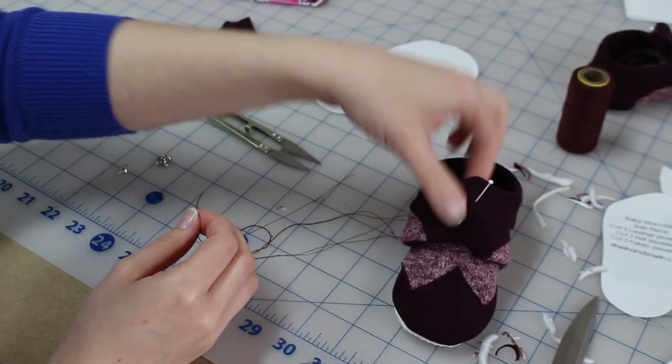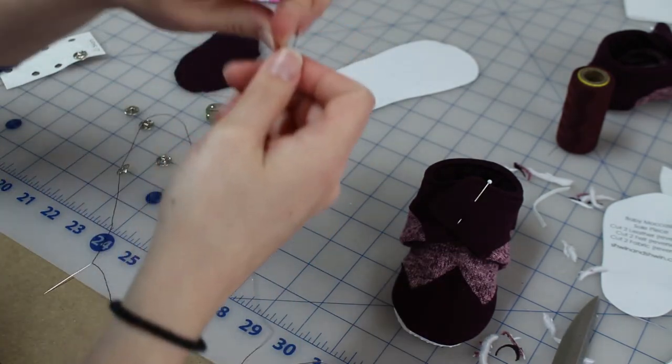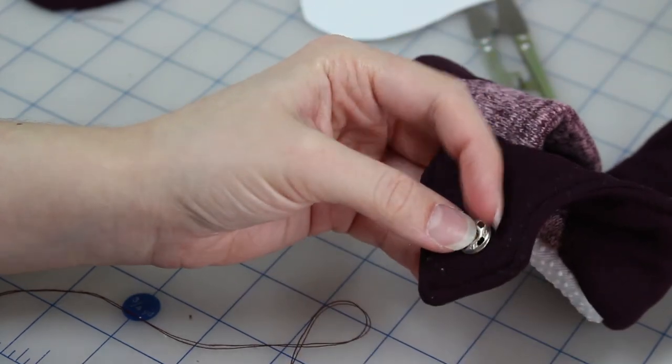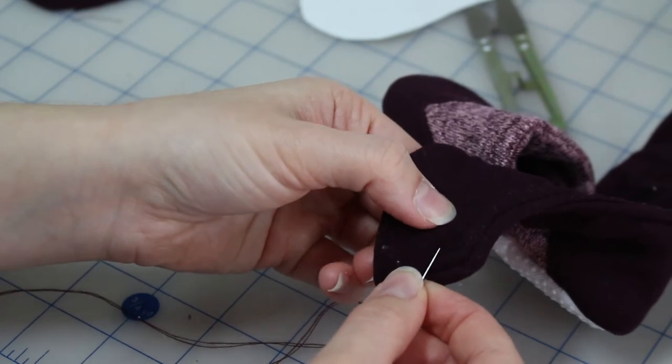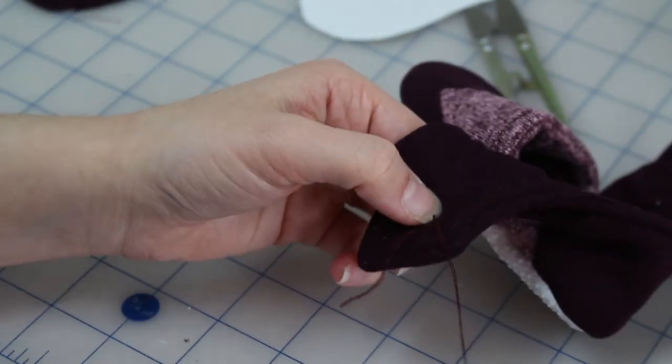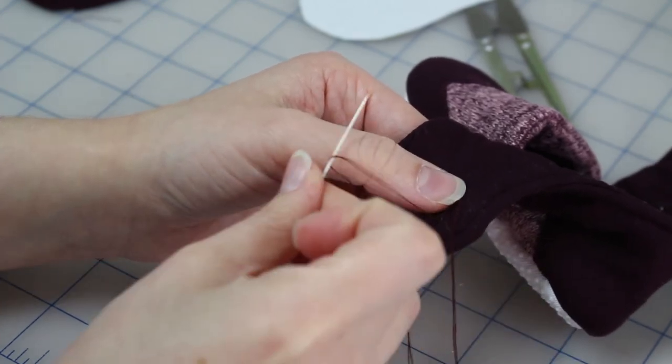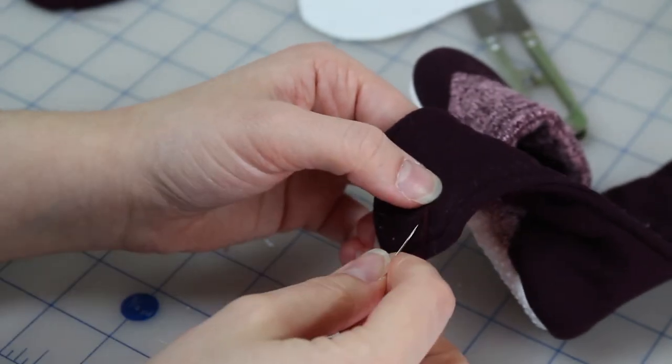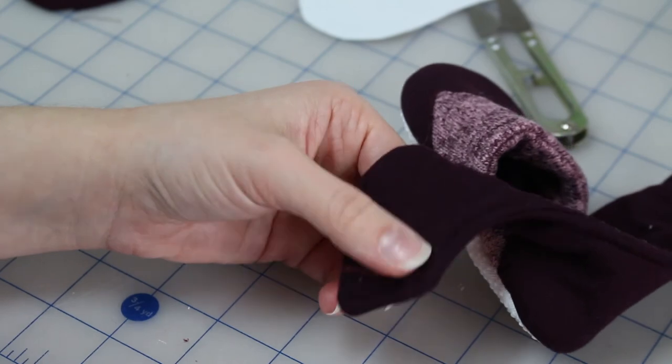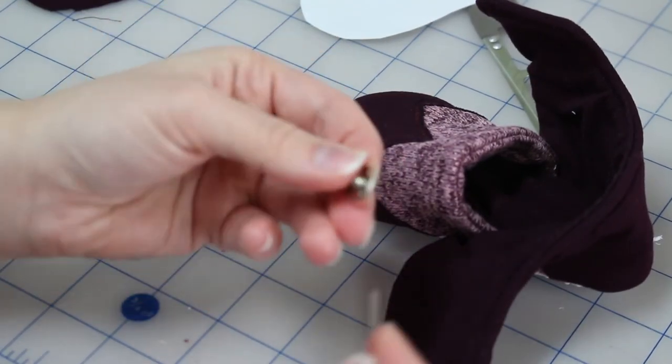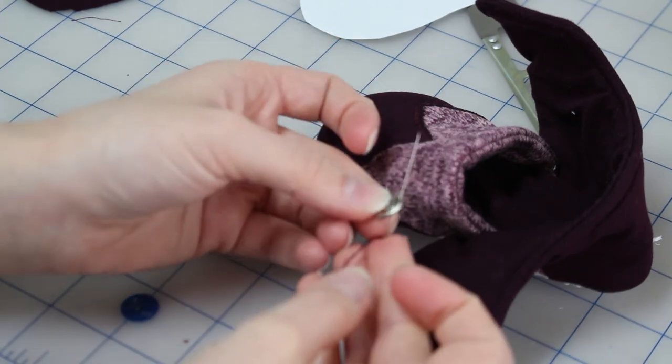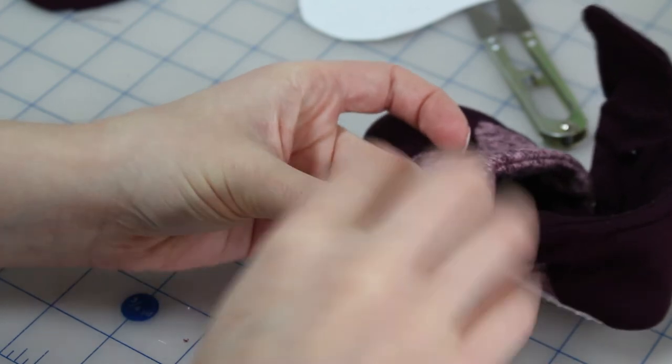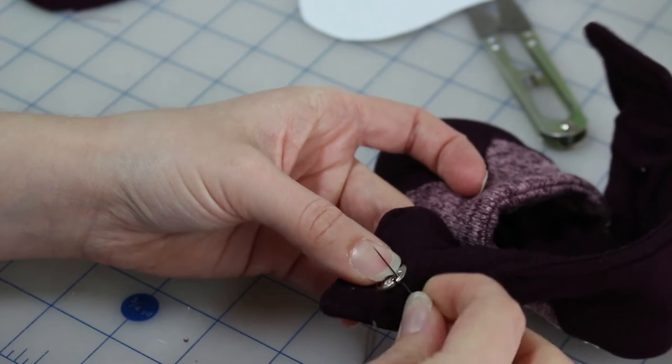So I want to sew the snap to the ankle part so that it has a closure on it. So I'm going to double up my thread, my needle, and tie a knot right kind of in the center. So I'm going to go underneath where I can access one of the holes, my needle through, and I'm going to put my needle through the loop of my knot and pull it tight. And I'm just going to go through that same spot two times to kind of lock that knot in. I'm going to take my snap, go through one of the holes, and I'm going to catch a piece of my fabric and go through my hole at the same time.